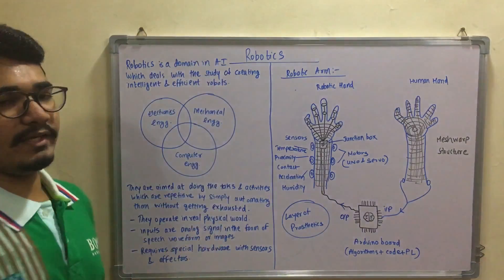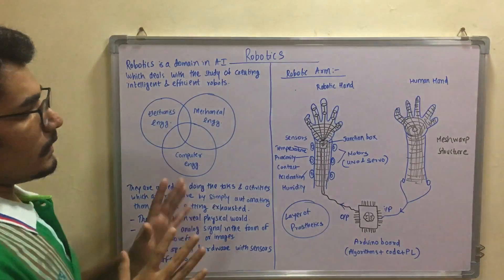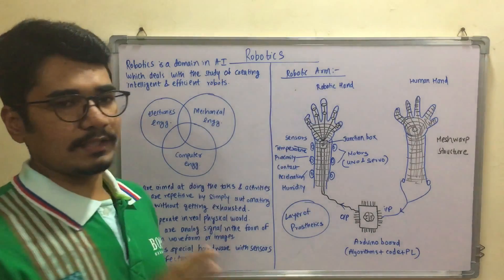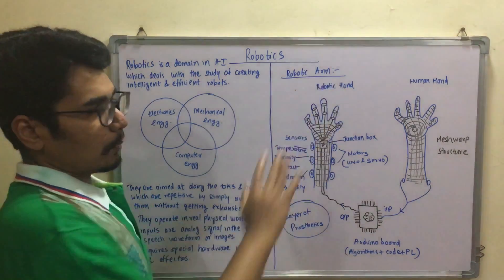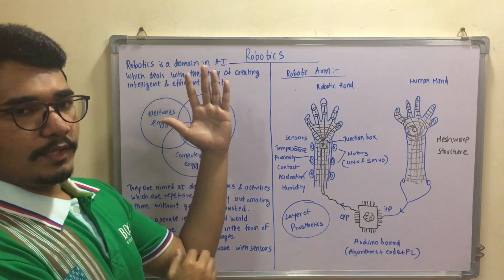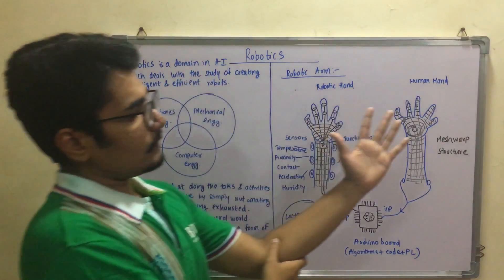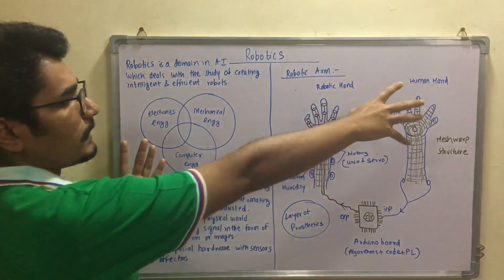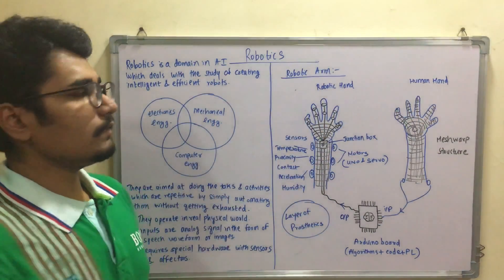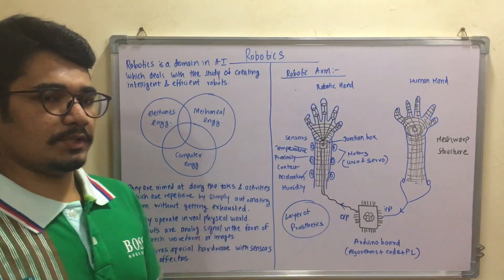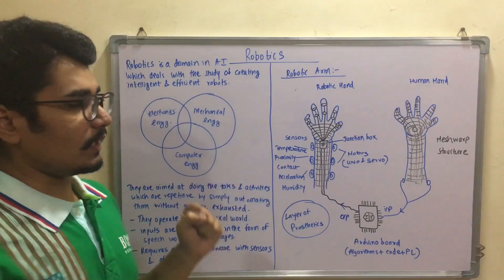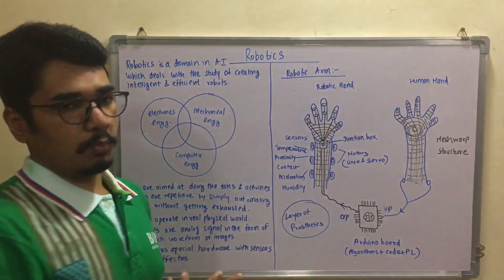This is a quick introduction to robotics and artificial intelligence. Now let us move to this section — a basic construction of a robotic hand. We have a human hand on one side, and we will construct a robotic hand with its help. Let us understand what is required in construction, and how you can replicate the actions done by a human hand with a robotic hand.